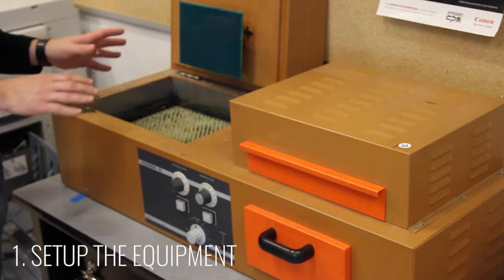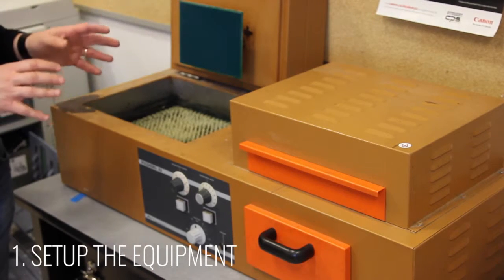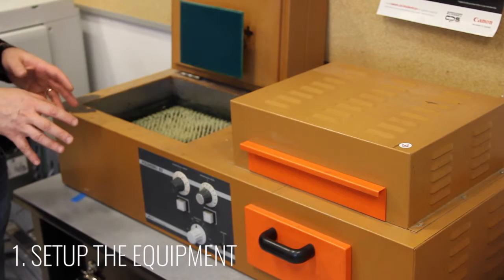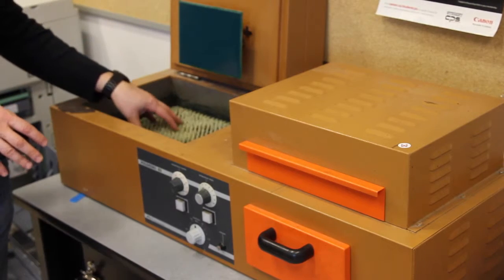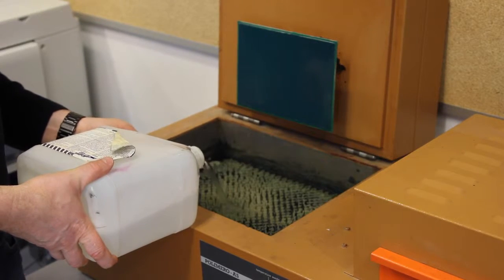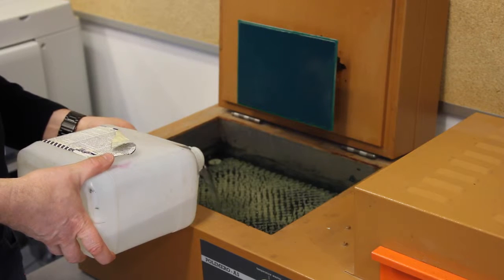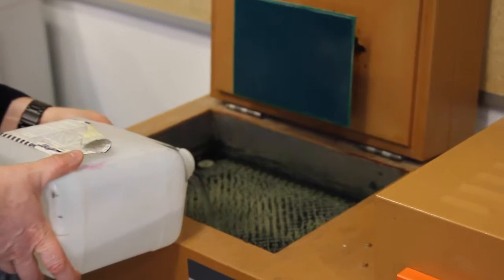First things first, we need to set up the equipment to make sure that it's at optimal temperature for the process and we'll start by making sure that the empty water well is filled with lukewarm water. Continue to fill this to the point where the water reaches the top of the bristles.